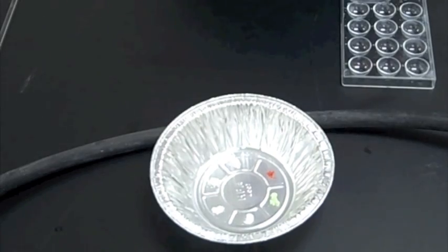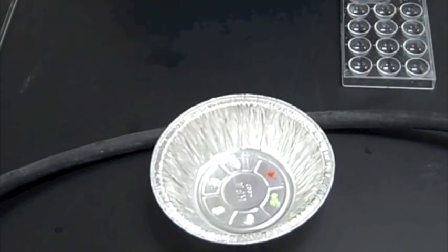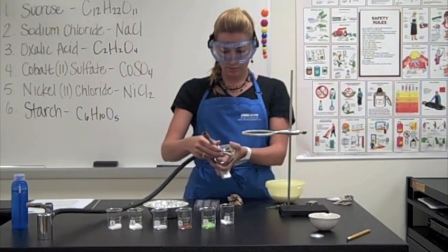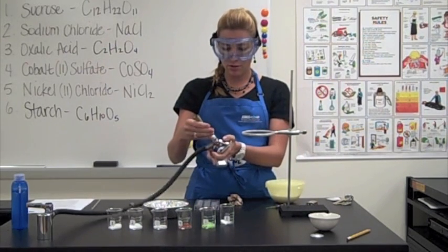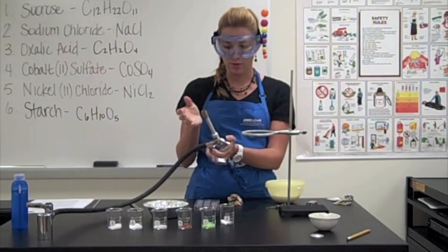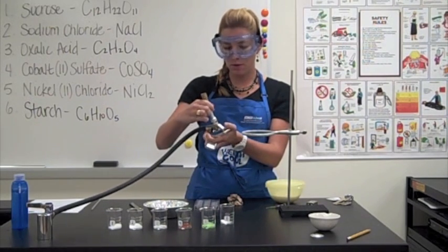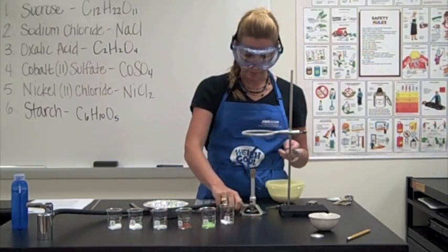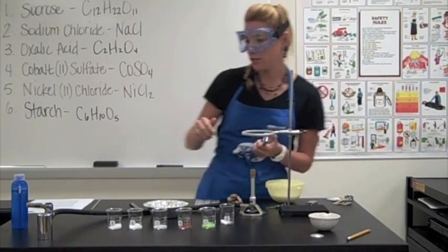Alright, so we have all six of our samples on the plate. We are now going to get our Bunsen burner lit. Remember when you're lighting your Bunsen burner, close the little dealy-thingy, sorry I'm forgetting the name of it, all the way and then open it about a full turn. The reason you do this is just so you don't burn your instructor when I come by to light it for you.